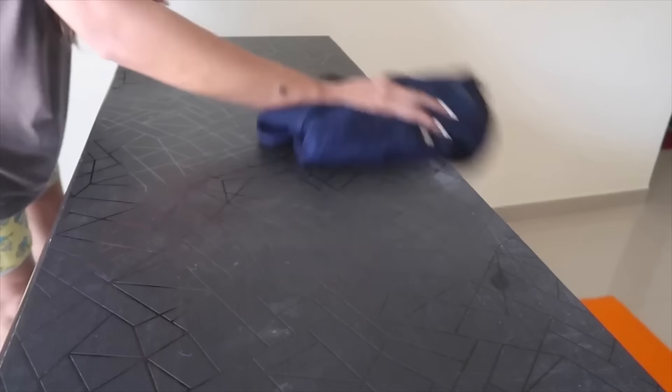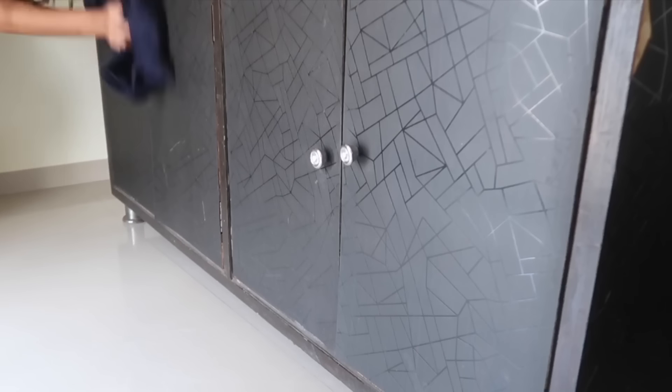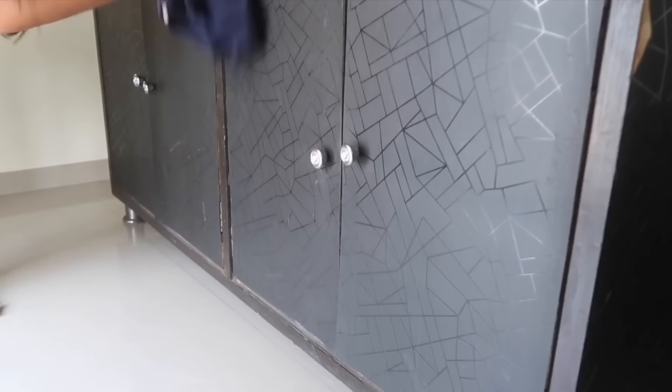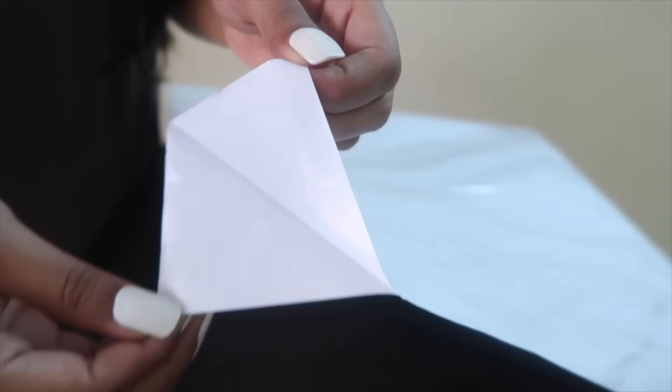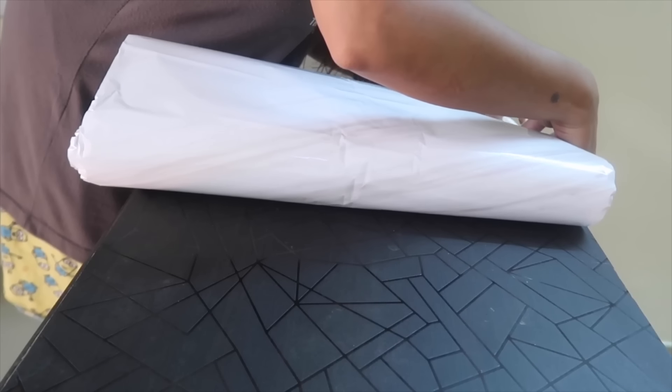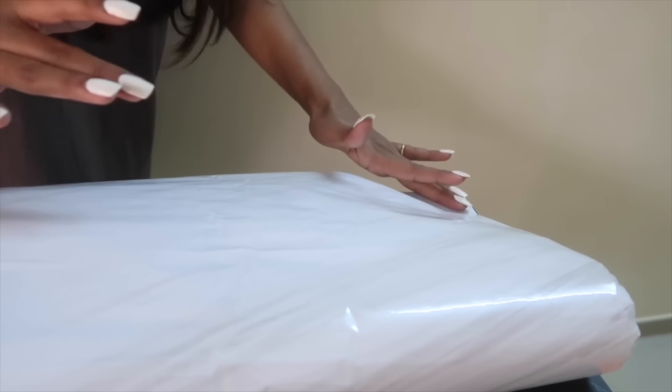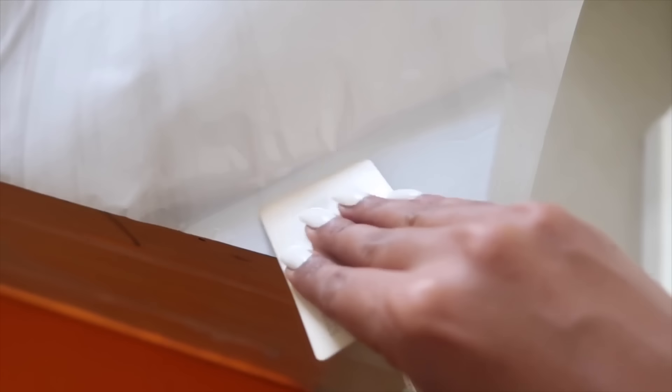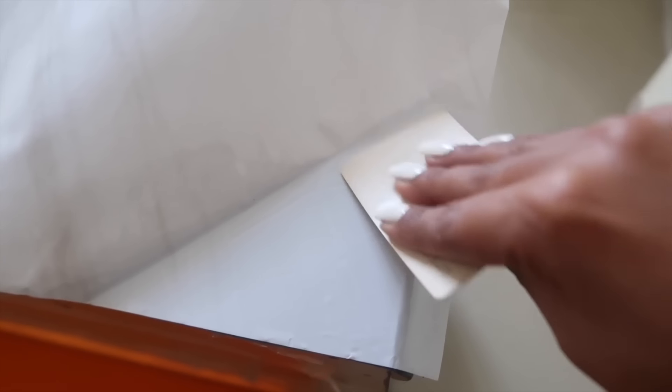So sub se pehle koi bhi kam shuru karne se pehle, make sure ki jis bhi furniture ke upr aap kam karre hain usko ek dry kapdhe se saaf karke sari dust nikaal le. Uske baad maine paper ki pahli sheet leke uska piche ka paper hata raha hoon aur usse is tari ke se chiprana shuru karre hain. Agar aap isse is tari card ki help se lagayenge to yeh bhoat hi aasani aur safaii se furniture pehle dhega aur biche me koi bubbles ya koi creases nahin padhegi.